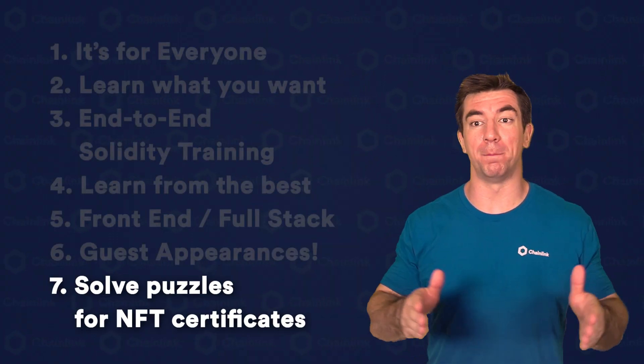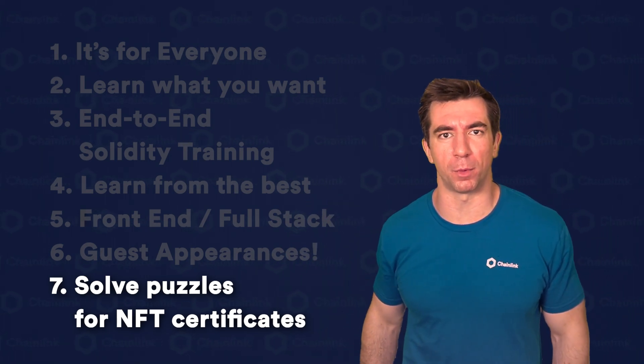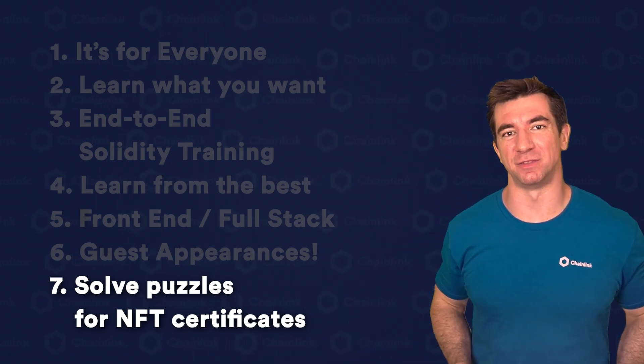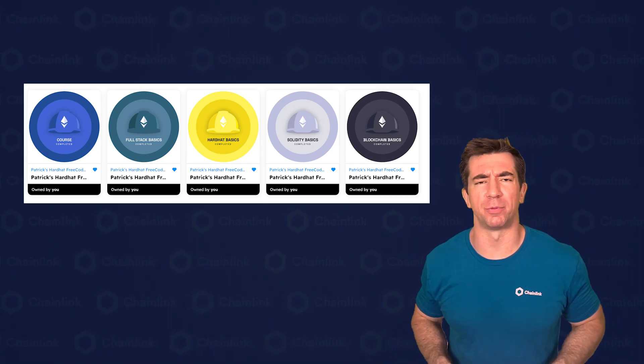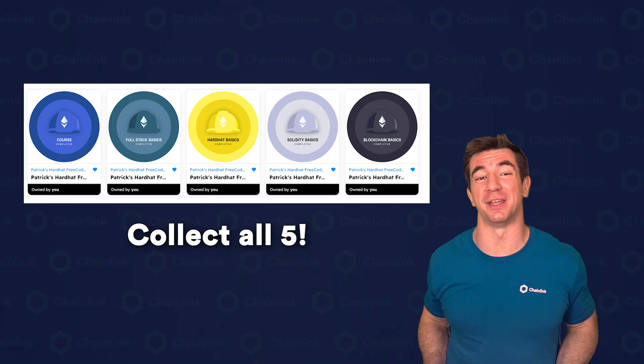For those of you who want proof that you've finished and gone through this course and have the skills — at the end of each major section we've left a QR code on screen for you to scan. It brings you to a smart contract that has a riddle, a coding problem, and if you solve it you'll get an NFT signifying you've actually learned the contents of that section. We give you the knowledge to solve all of them — it's up to you to apply it. They get much harder, but they're completely optional. If you collect all five, you kind of prove that you're a smart contract master.